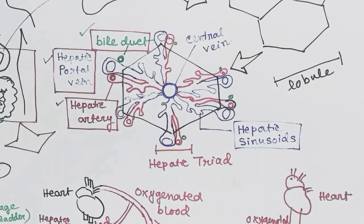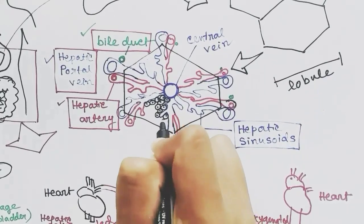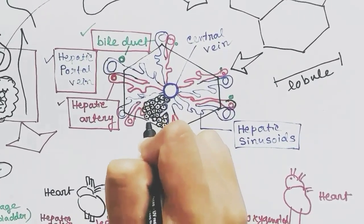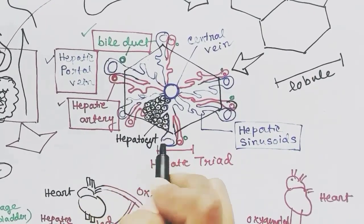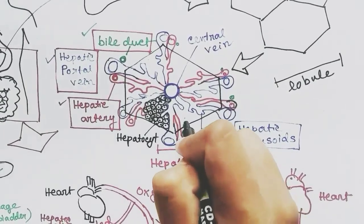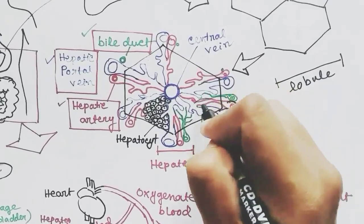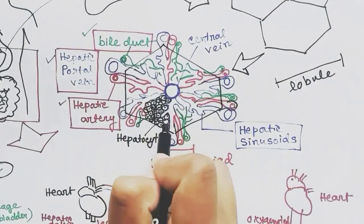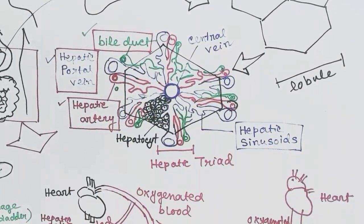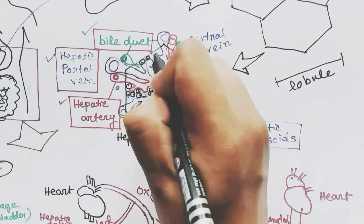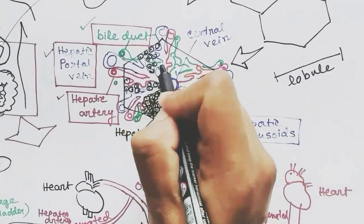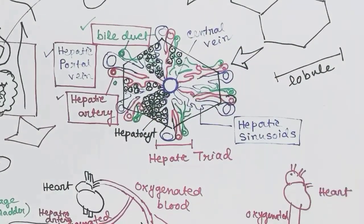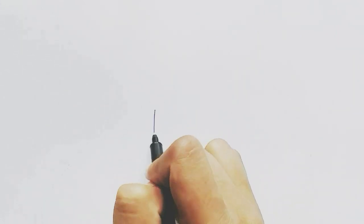The bile duct will also form its processes throughout the cells of the liver. The hepatocytes — which are the cells of the liver — are present between the sinusoids. The processes of the bile duct run throughout the hepatocytes and are called the bile canaliculi.